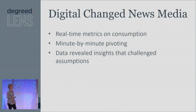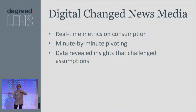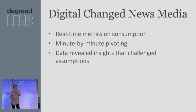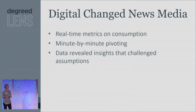Going into how digital changed news media — now there's real-time metrics on how people are consuming. And they can go minute by minute to pivot and see what articles are being read most often, what is gaining traction. They can look at Twitter feeds to see what's happening in advance of them putting something on their news channel. They can also see what their competitors are doing. And the interesting thing about that is this data reveals insights that can challenge our assumptions and what we think.